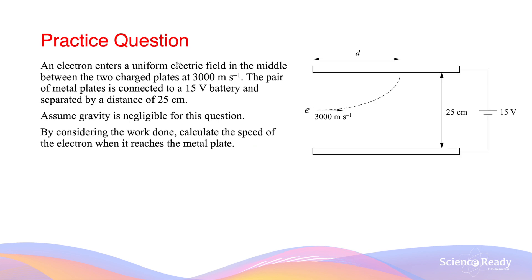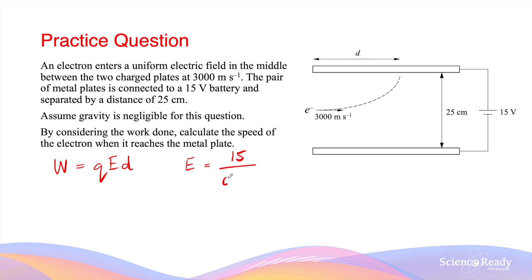An electron enters a uniform electric field in the middle between two charged plates at 3,000 m/s. The pair of metal plates is connected to a 15-volt battery and separated by a distance of 25 centimeters. Assume gravity is negligible. By considering the work done, calculate the speed of the electron when it reaches the metal plate. The work done can be given by W = QED, and we can find the electric field strength by dividing the voltage by the plate separation distance.